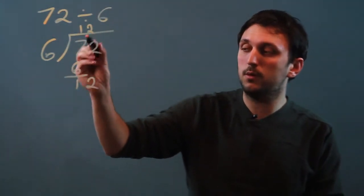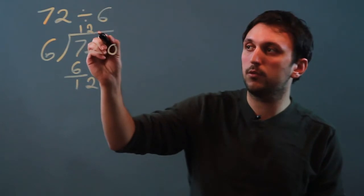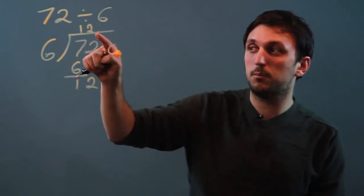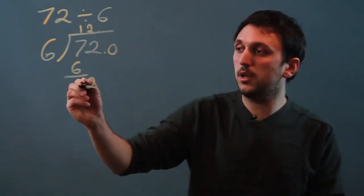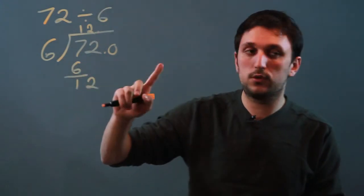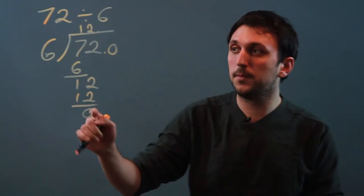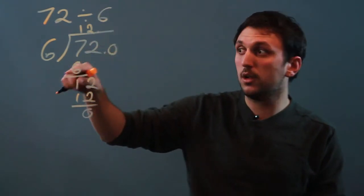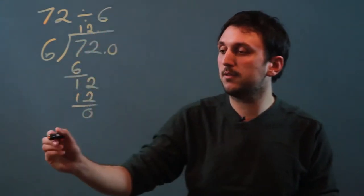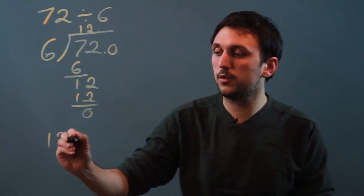So we have 12 up here. And this is 72.0, so this is 12 so far point something. But 6 goes into 12 two times cleanly, so it's 12 minus 12, which is 0. So there's not going to be any remainder. So 72 divided by 6 equals 12. That's our answer.